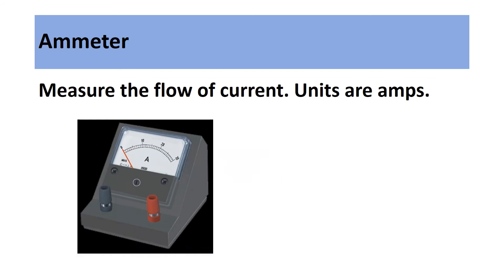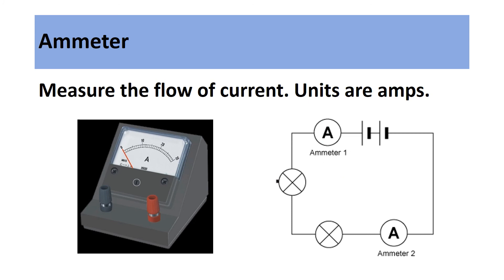Our next electrical component is an ammeter. The role of an ammeter is to measure the flow of current within an electrical circuit. The units for this are amps. The next image shows a number of ammeters placed within an electrical circuit to measure the flow of current at various points.